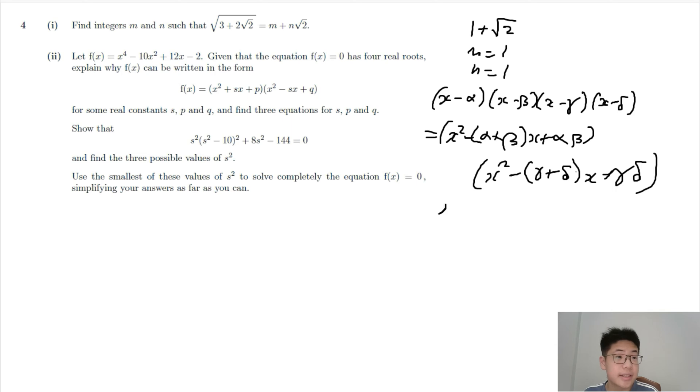Since α + β + γ + δ equals 0 from the coefficient of x³, it follows that α + β equals -(γ + δ).